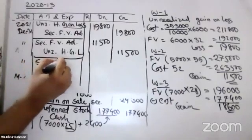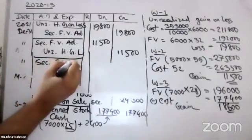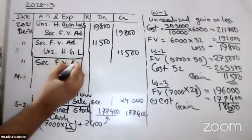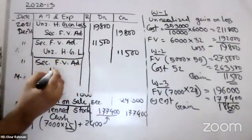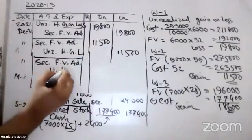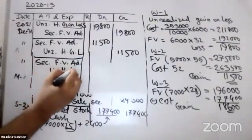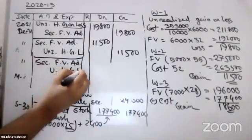Security fair value adjustment — zero. Unrealized holding gain or loss.